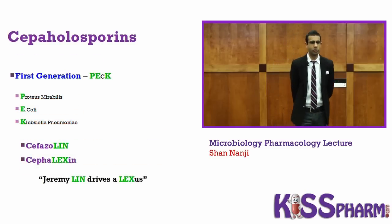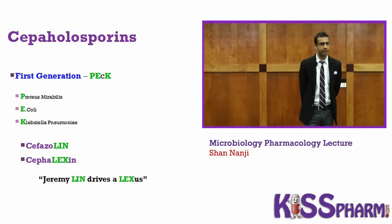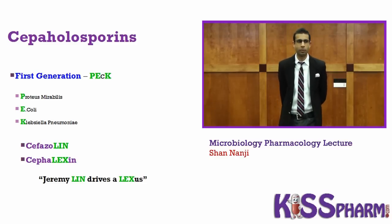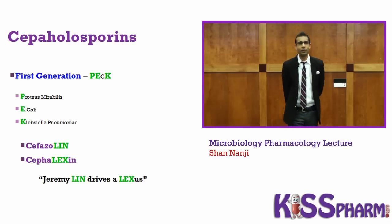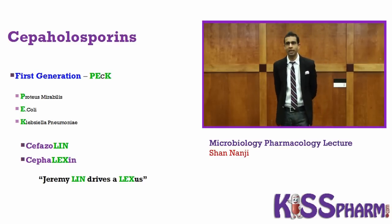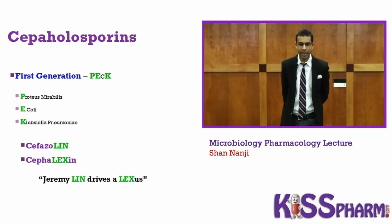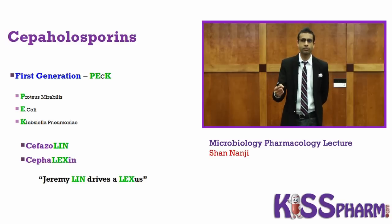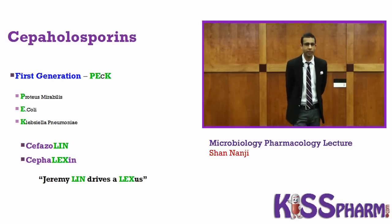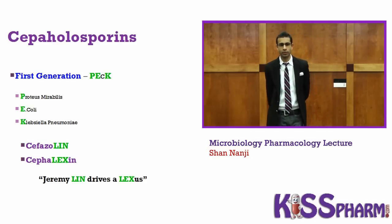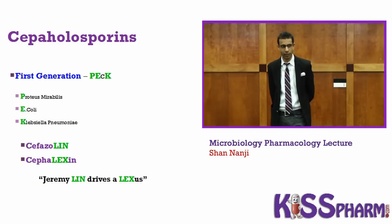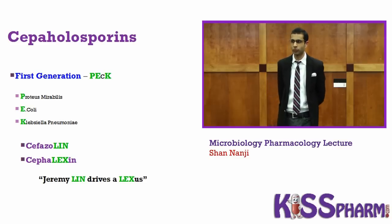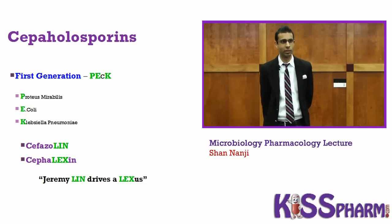First generation cephalosporins are used to treat PEC: P for Proteus, E for E. coli, K for Klebsiella. As for the drug names, I'm not going to memorize the whole drug — I'm going to recognize a pattern. The first generation drugs start with 'Ceph' and have 'Lin' and 'Lex' in them — cefazolin and cephalexin. First generation: Lin and Lex.